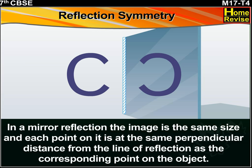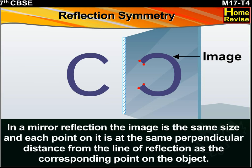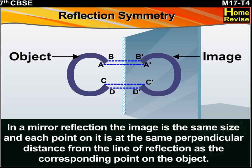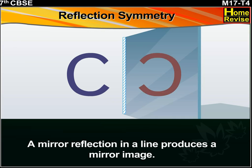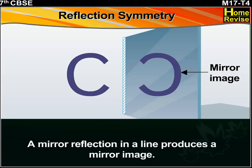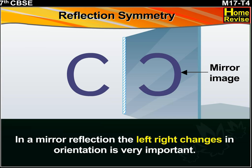In a mirror reflection, the image is the same size and each point on it is at the same perpendicular distance from the line of reflection as the corresponding point on the object. The shape is the same but the other way round. Note that a mirror reflection in a line produces a mirror image, and the left-right change in orientation is very important.